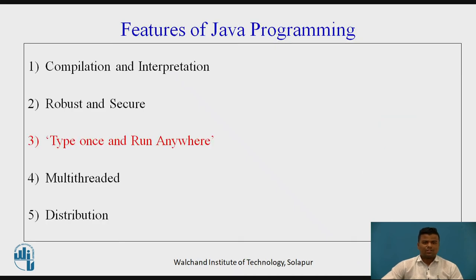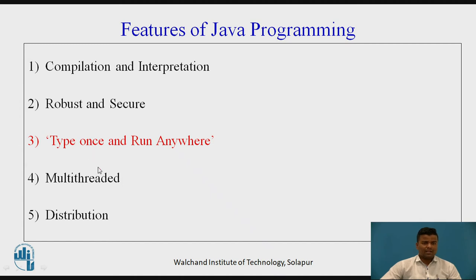Now, features of Java programming. There are different features: compilation and interpretation, robust and secure, write once and run anywhere, multi-threaded, and distribution. Java programming is a two-stage process, whereas C and C++ is a one-stage process. The two stages of Java programming are compilation and interpretation.